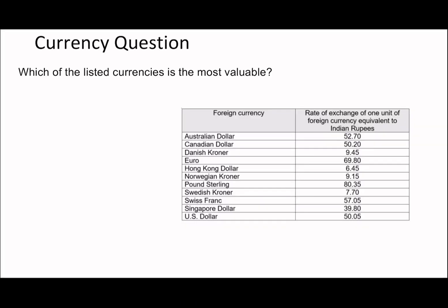Let's look at a question: which of the listed currencies is the most valuable? 'Most valuable' is a synonym for the strongest. For the strongest currency you need less of that currency. This table shows the rate of exchange of one unit of foreign currency equivalent to rupees — so one unit of each currency tells you how many rupees you'll get. If a currency is strong, you'll get more rupees from it.